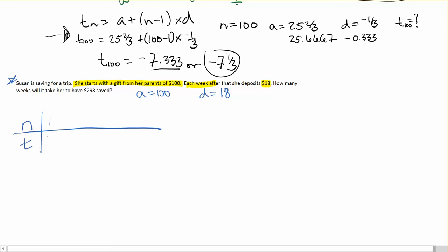We know the first one is $100, and then after that she has $18 added on. So the second week, she'd have a total of $118 in her piggy bank, and on we go.